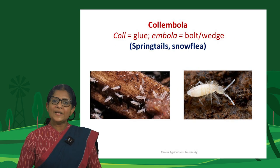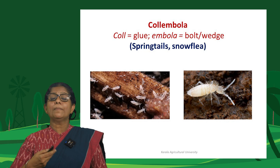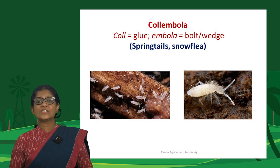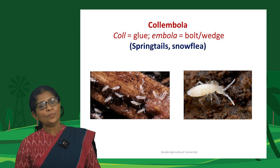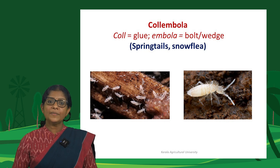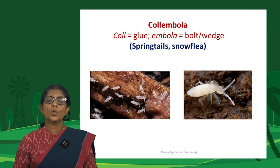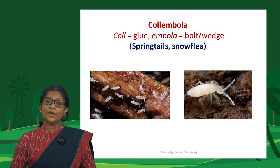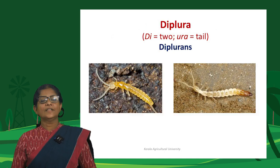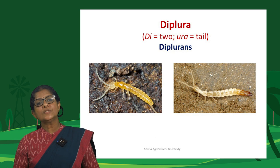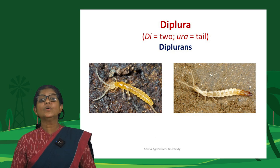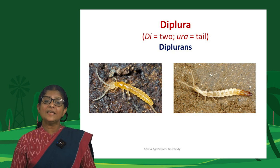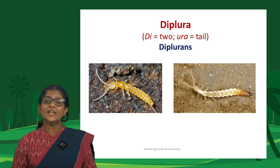Collembola are springtails or snow fleas — they can jump, hence the name springtails, and some are associated with snow. The word Collembola is derived from 'colla' (glue) and 'embola' (bolt or wedge), referring to pregenital abdominal appendages used to anchor on the substrate. The order Diplura includes diplurans; 'di' means two and 'ura' means tail, as they have two tail-like appendages posterior to their last abdominal segment.